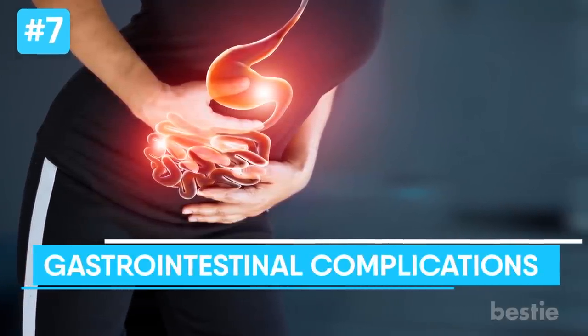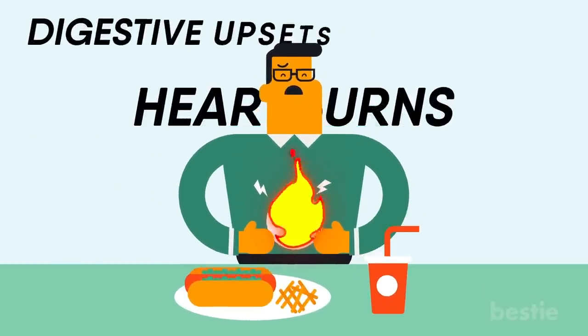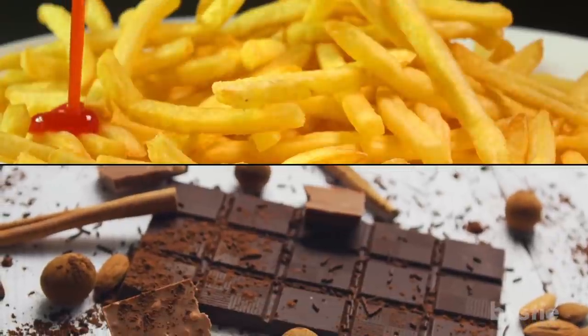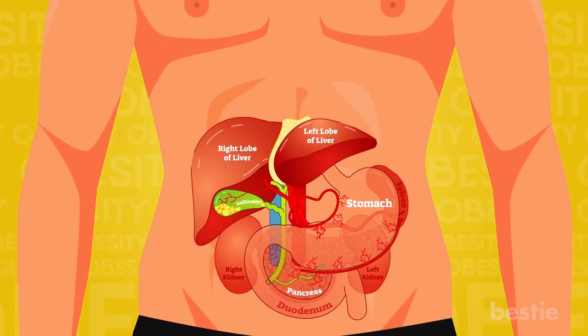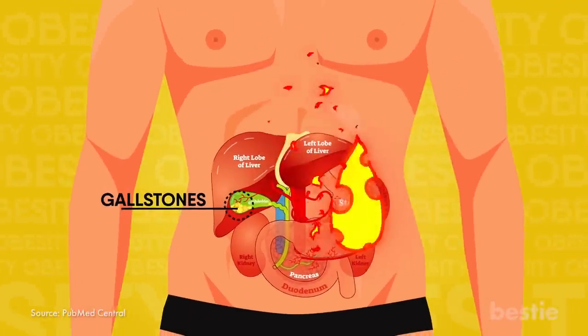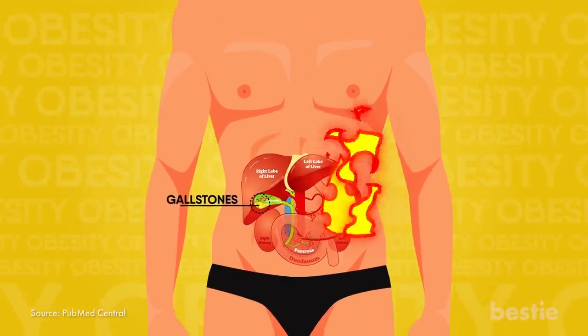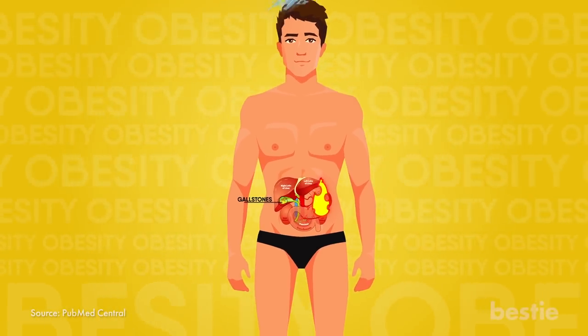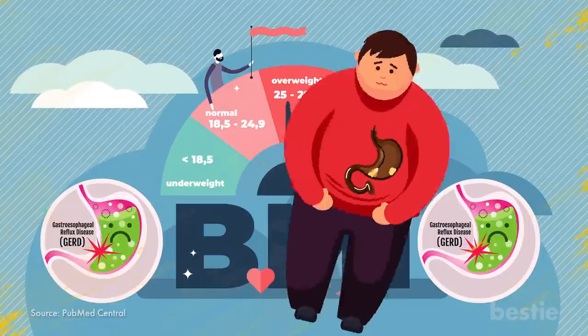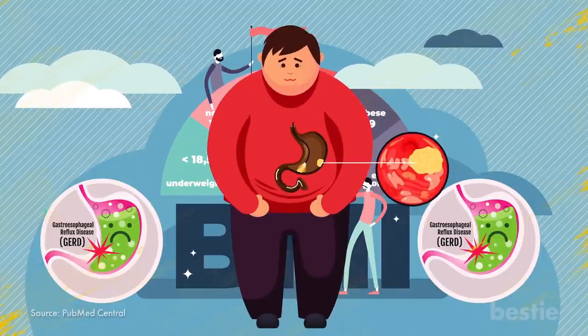7. Gastrointestinal Complications. Do you get heartburn often? Digestive upsets? Indigestion? All of these could be linked to your weight. That tempting plate of french fries or chocolate is pushing you towards digestive upset and gastrointestinal issues. Obesity increases the risk of gallstones by building up bile and hardening the gallbladder to the extent of requiring surgical measures. Chronic disorders like GERD — gastroesophageal reflux disease — have been associated with obesity-related issues, with several meta-analyses showing a positive correlation between BMI and GERD. Obesity is also believed to have an influence over gastric cancers.